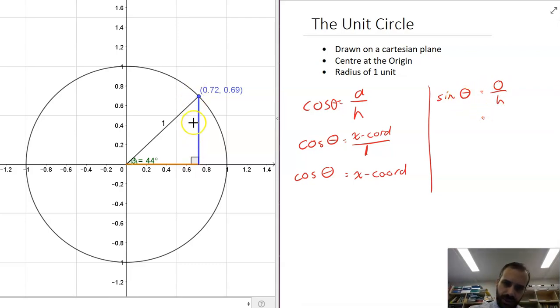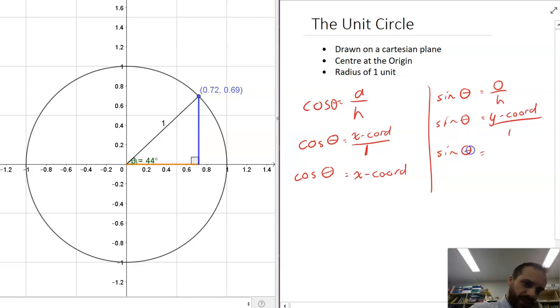The opposite is this blue line here, and the blue line corresponds to the y-coordinate of my dot. And the hypotenuse is one. And anything divided by one is just itself, so now I can say that sin θ is equal to the y-coordinate.